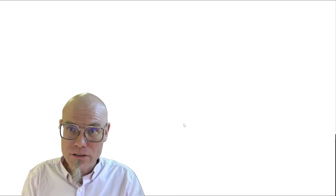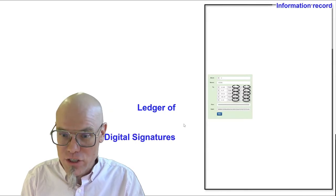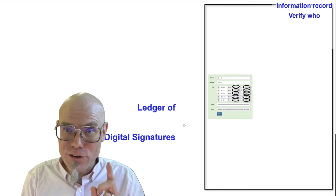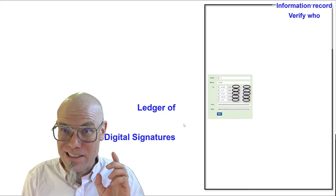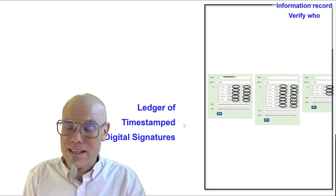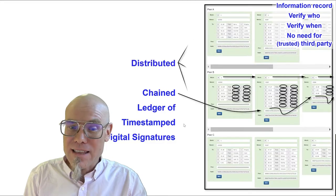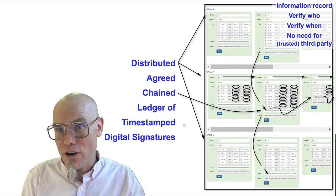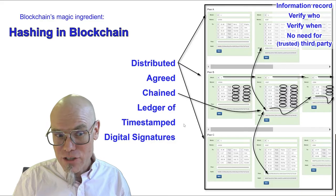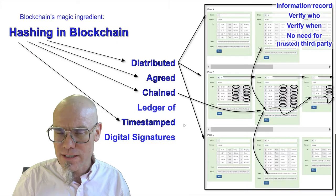The hash function is involved in almost all aspects of the blockchain. A blockchain is a ledger, an information record of digital signatures — and these are actually the only two where the hash function is not involved; that's 1970s technology. Everything else, the hash function is involved. It's time-stamped and chained together — that is the blockchain. Then it's distributed and agreed on — that's the consensus algorithm. Hashing in blockchain is part of all of these, except the ledger and digital signatures.